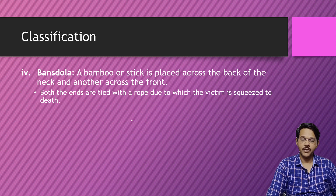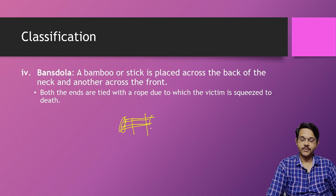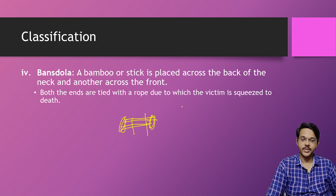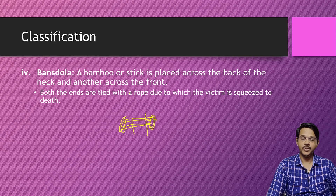Next is bansdolla. Here a bamboo stick is placed in the front of the neck and another is placed at the back of the neck. Both ends of the bamboo sticks are tied and squeezed together, compressing the neck. This method using bamboo sticks twisted at both ends is called bansdolla.